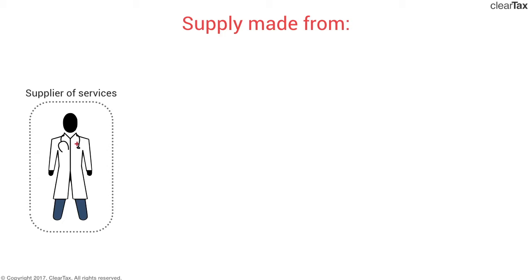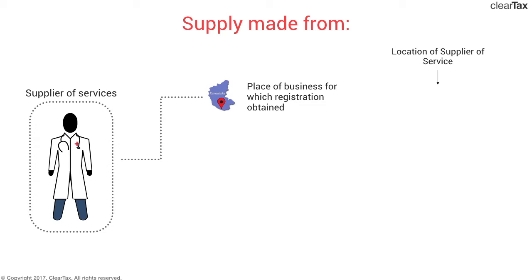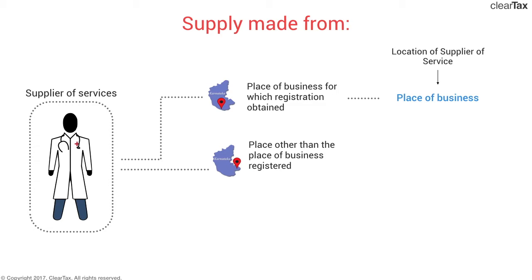The first and primary location would be: if the supply is made from a place of business for which the registration has been obtained, then the location of supplier would be such place of business. In case the supply is made from a place other than the registered location, then the location would be a fixed establishment other than the place of business. If the supplier of services has supplied from more than one location — whether from his place of business or fixed establishment — the location would be of that place which is most directly concerned with the provision of supply.